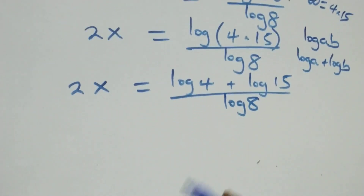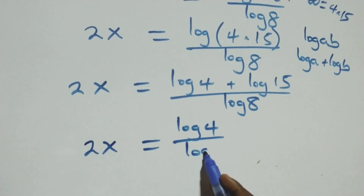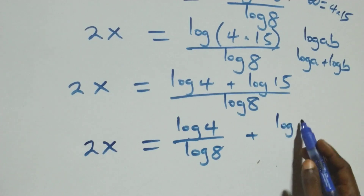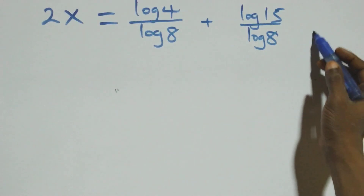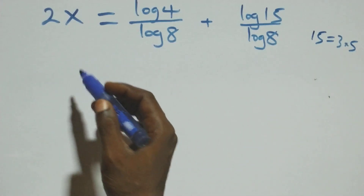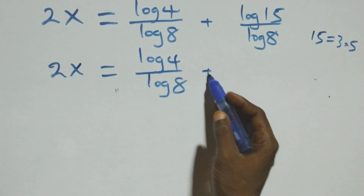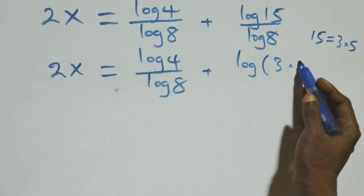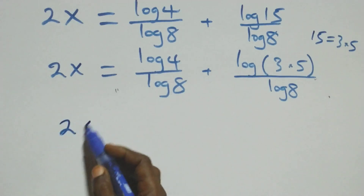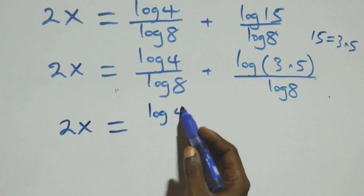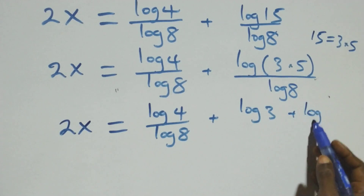Then we can also rewrite 15 as 3 times 5, and we separate this into two fractions. What we have becomes 2x equals log 4 over log 8 plus log 15 over log 8. Applying the log product rule again, this becomes 2x equals log 4 over log 8 plus log 3 plus log 5, all over log 8.